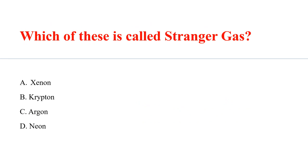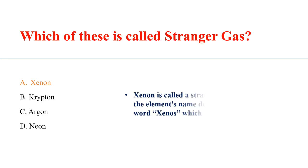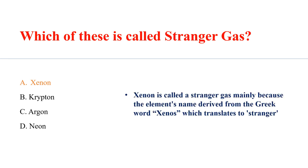Xenon is called the stranger gas, mainly because the element's name is derived from the Greek word 'xenon,' which translates to 'stranger.'